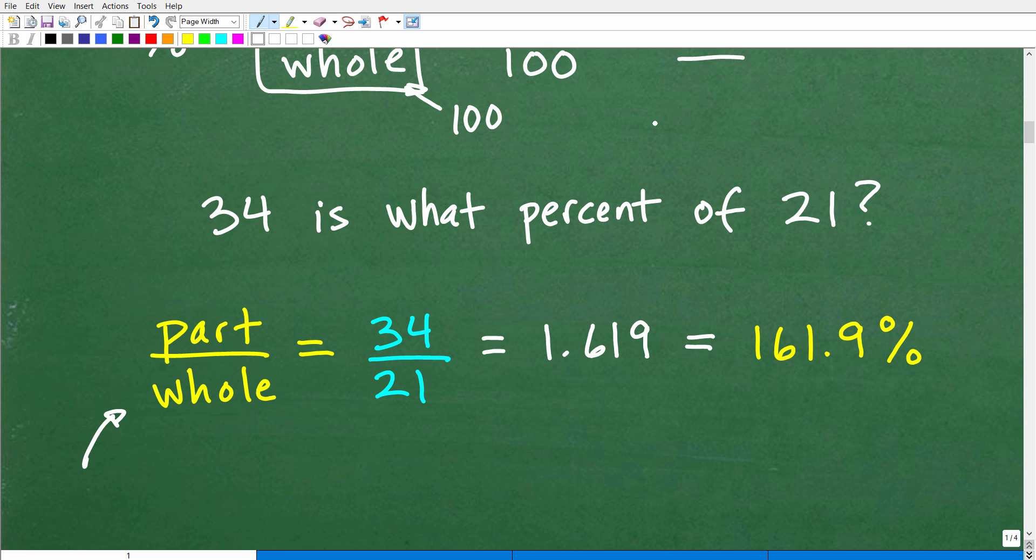So what is the part? Well, if I said 70, let's write this problem. 70 is what percent of 100? Okay. 70 is what percent of 100? That question. What is the part? Well, it's clear that 70 is the part and 100 is the whole.